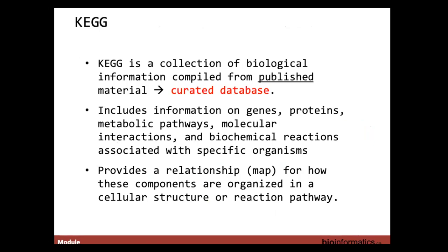KEGG is a collection of biological information and a manually curated resource, but it doesn't focus only on pathways. Its pathways contain information on genes, proteins, molecular interactions, and reactions across multiple organisms — it's one of the few databases capturing a whole host of species. Reactome and WikiPathways are a bit more focused.